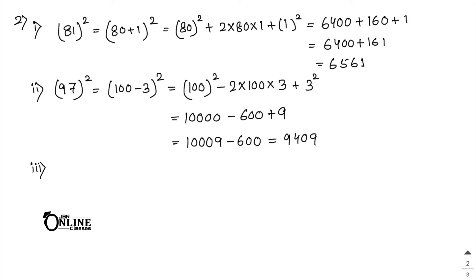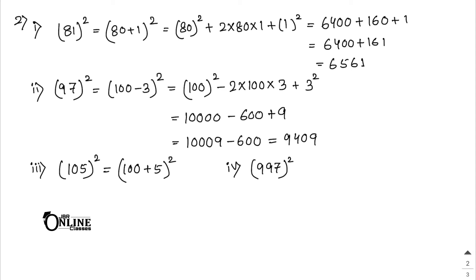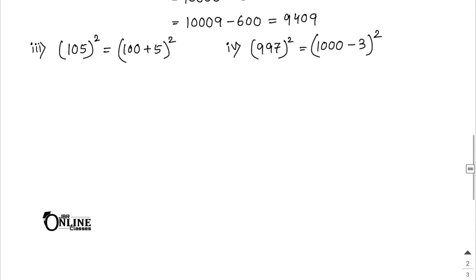105² = (100 + 5)² — apply (a + b)² formula. 997² = (1000 - 3)² — apply (a - b)² formula.